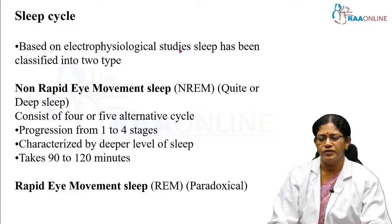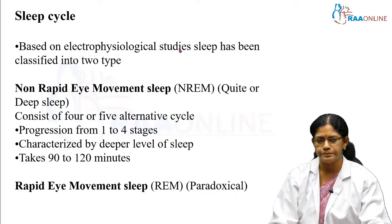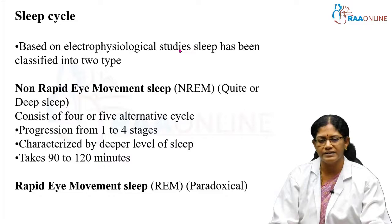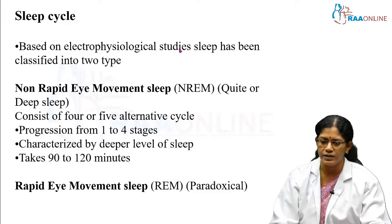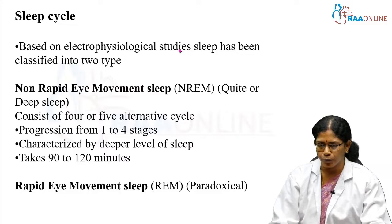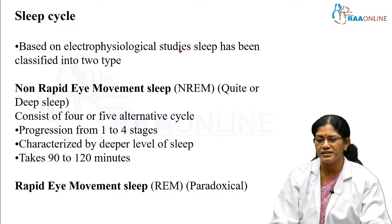To understand this group of drugs, we need knowledge about the sleep cycle. Based on electrophysiological properties, our sleep cycle is divided into two groups: NREM sleep (non-rapid eye movement sleep) and REM sleep (rapid eye movement sleep). NREM sleep consists of four stages.